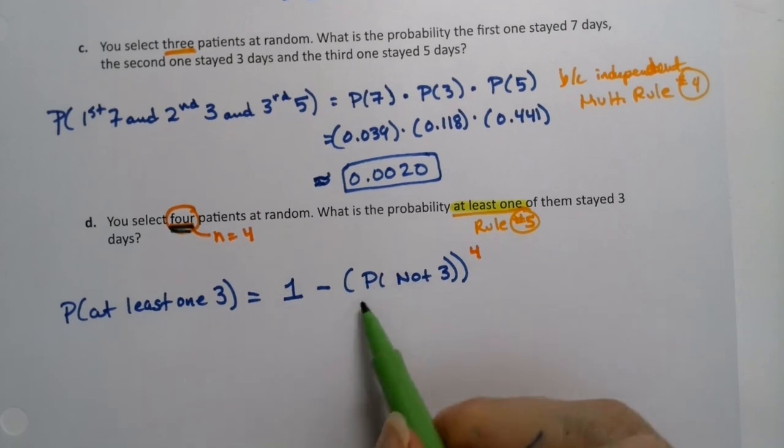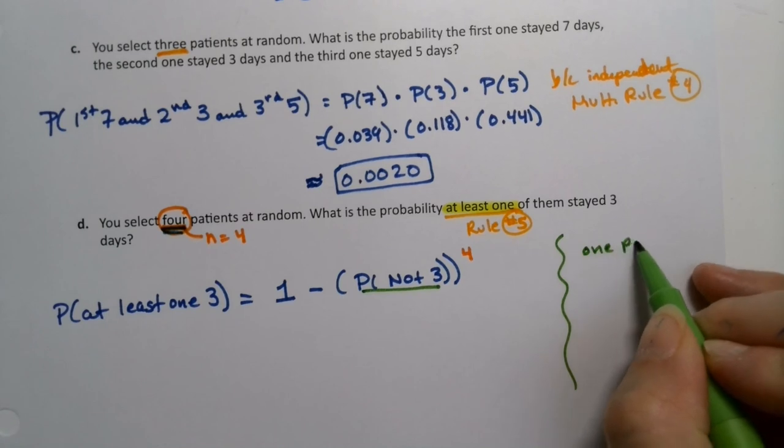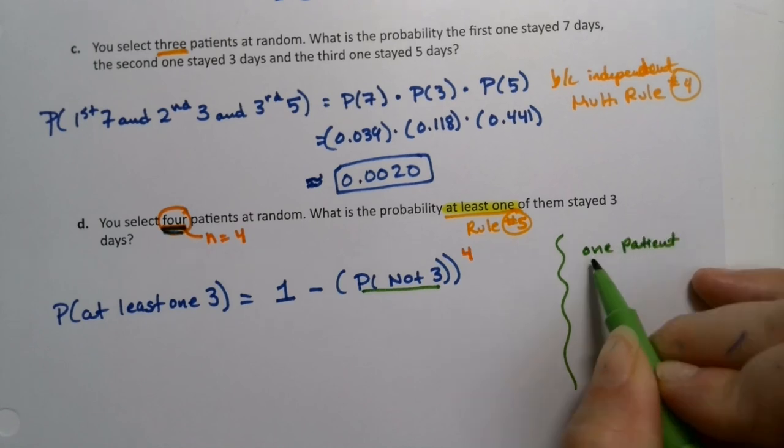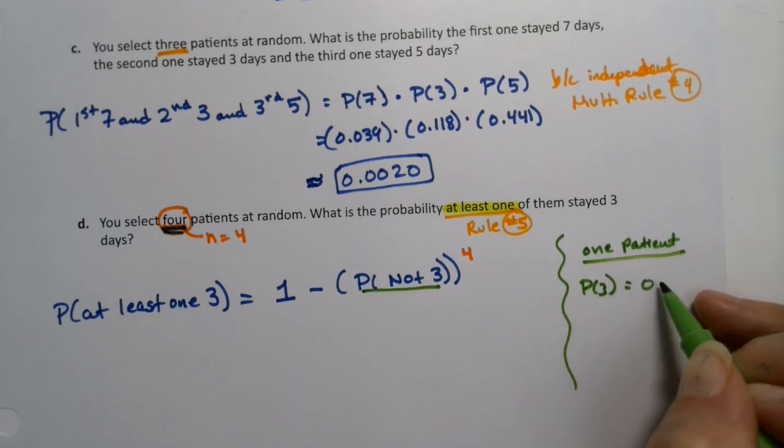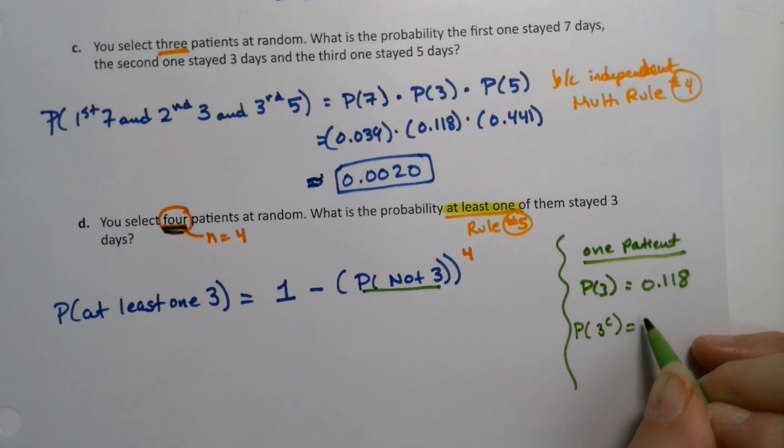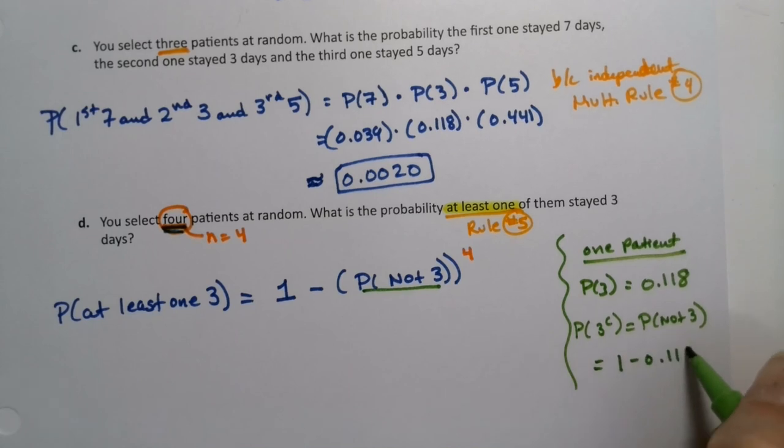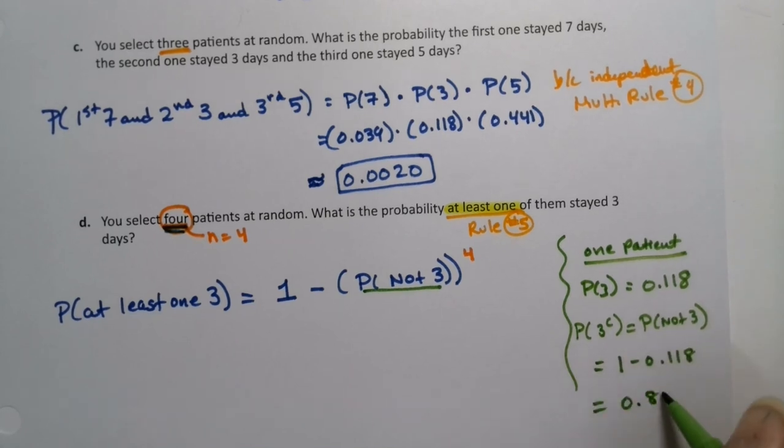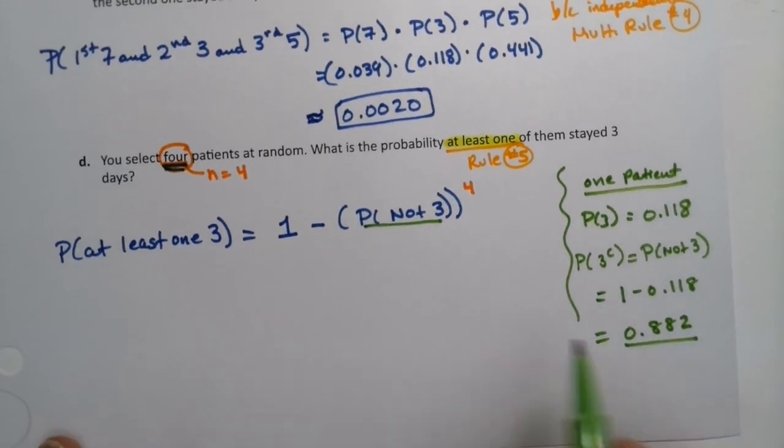All right. I need to go find the probability of not three. So let me kind of go over here. For one patient this time, because we're selecting patients, the probability of three is 0.118. So the probability of three complement, which is the probability of not three, same thing, would be one minus 0.118, which is 0.882. If you don't believe me, you're welcome to plug it into a calculator. All right. So that's what we'll put in here.